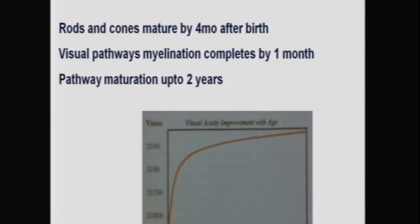The development of vision is also not complete at birth. Rods and cones mature by four months after birth, and visual myelination is continuing till one month after birth. Complete maturation of the pathway with complete myelination takes up to two years. So the child is not born with complete 6/6 vision — it may take up to two years depending upon the way we are measuring visual acuity to get reliable results.